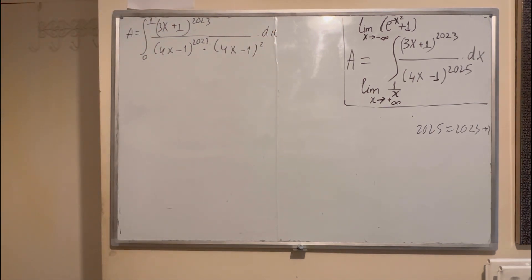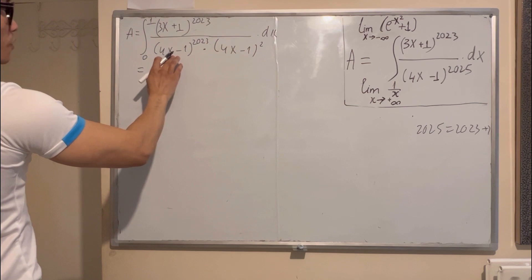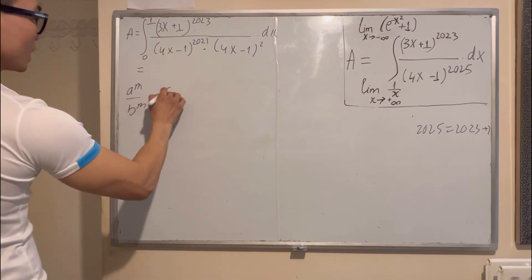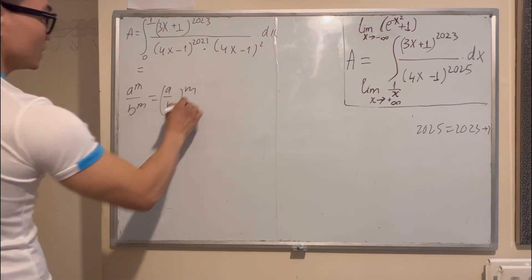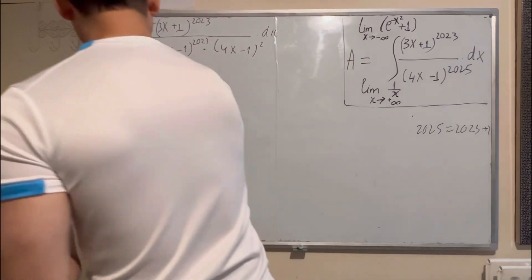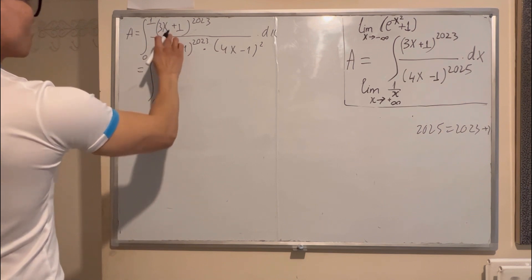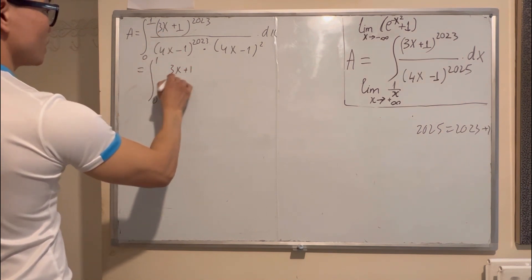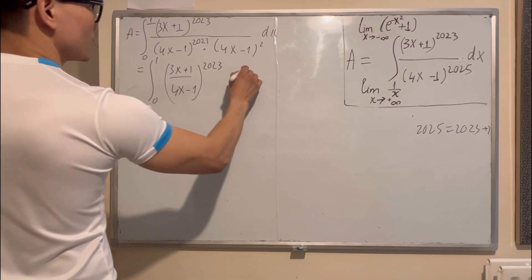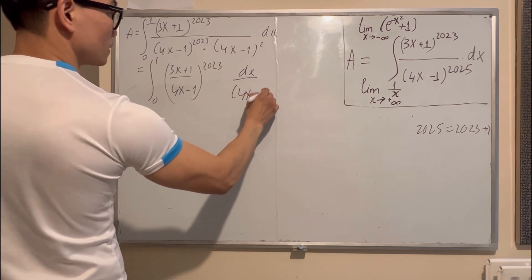Okay, for numerator and denominator with the same power, a^m over b^m equals (a/b)^m. You use that rule here, and you get (3x + 1) over (4x − 1), all to the power 2025, and then dx over (4x − 1) squared.